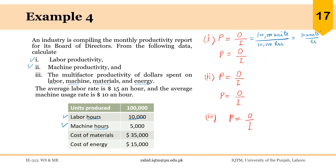The input for labor can also be written as a dollar value. In that case, the output is still 100,000 units, and the input is 10,000 labor hours multiplied by the labor rate of $15 an hour, which gives $150,000. So the productivity will be 0.67 units per dollar spent on labor.